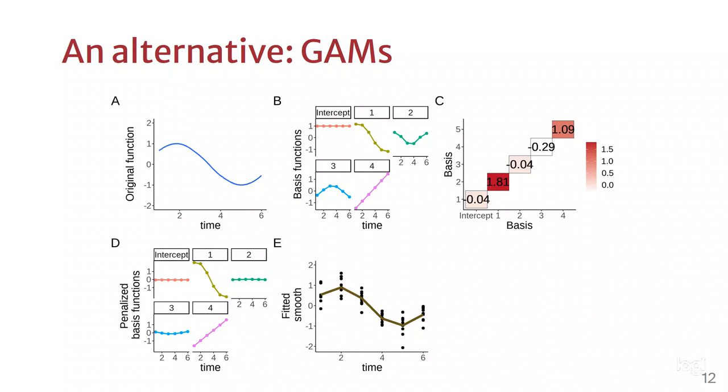Panel E has the actual smooth, which is made up of the different basis functions, and it's actually following the trend from the function of panel A. This is pretty useful, because then you can follow the trend of the data, and it can be non-linear, it can be of any shape.